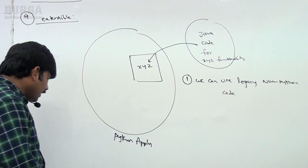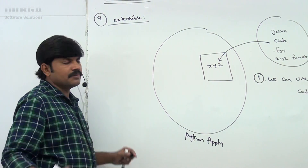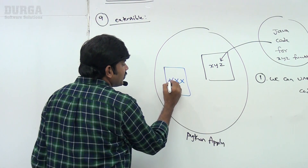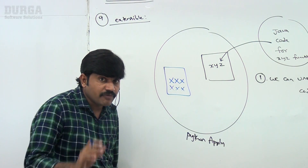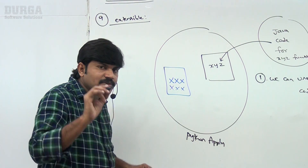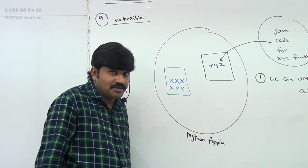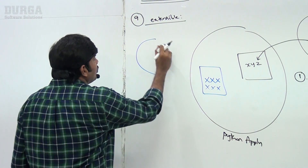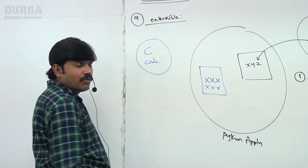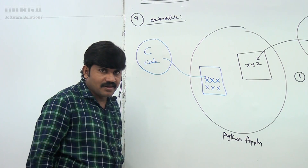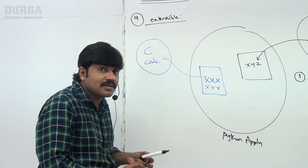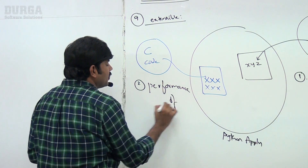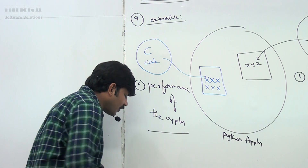The second advantage is performance. Assume there is one area where performance is very critical. Python is not that good performance-wise in such cases. What I can do is develop that functionality using C — I will write C code and use that C code in my Python application. The biggest advantage of this approach is that the overall performance of the application will be improved.